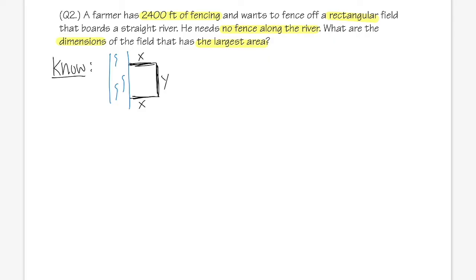Yeah, so this means we know that 2x + y, that should be 2400. So that is what we know. I don't know how many fishes are there, but that doesn't matter.